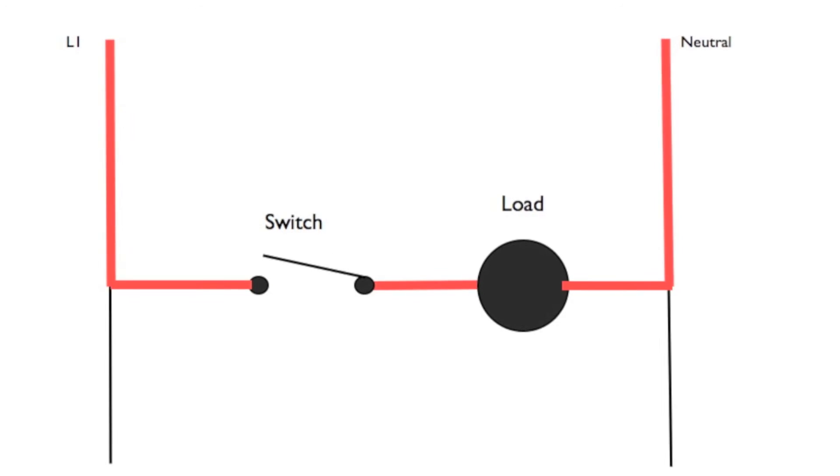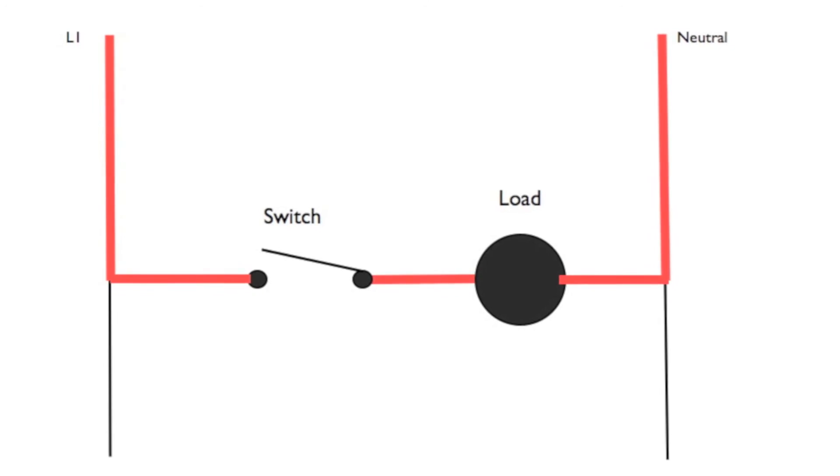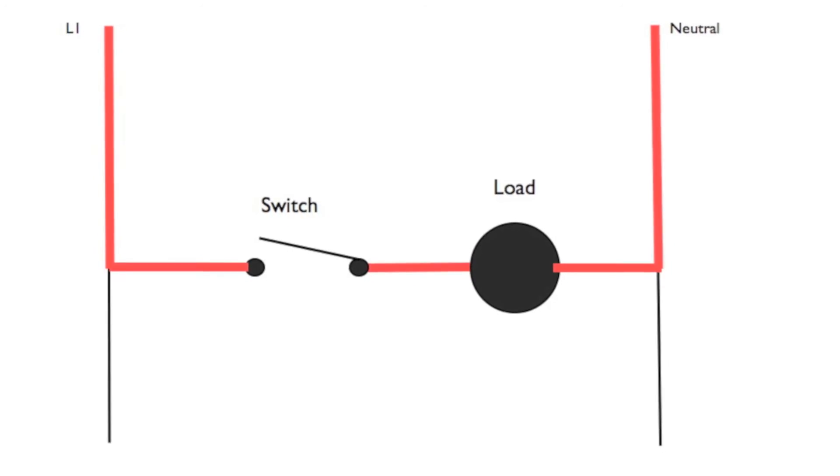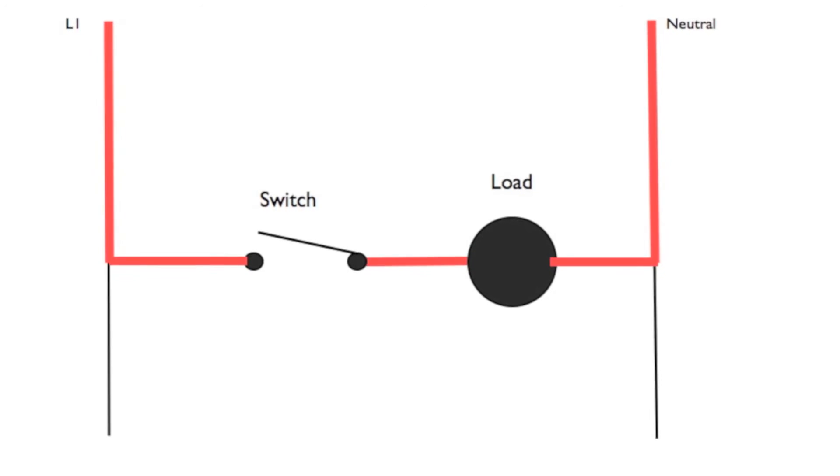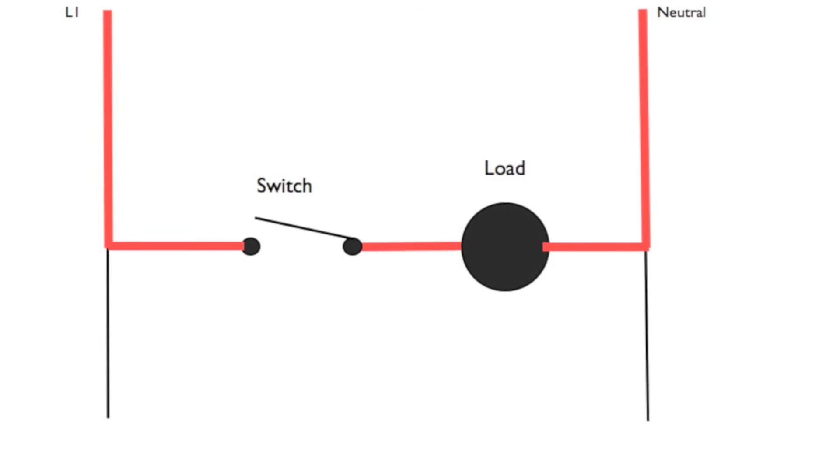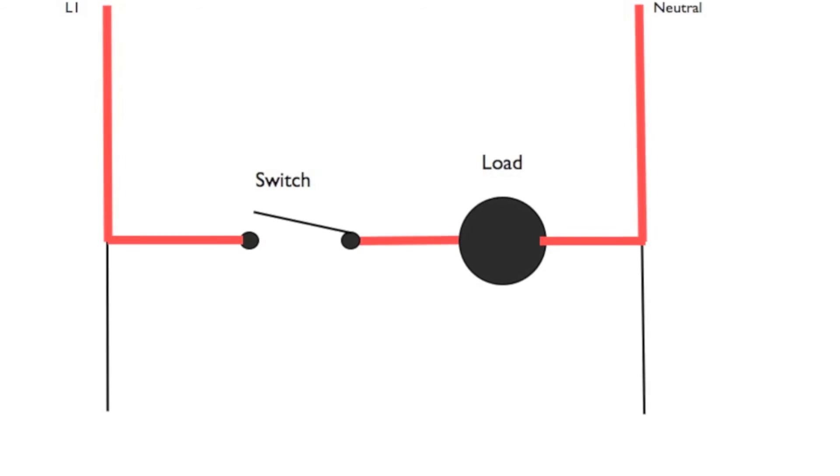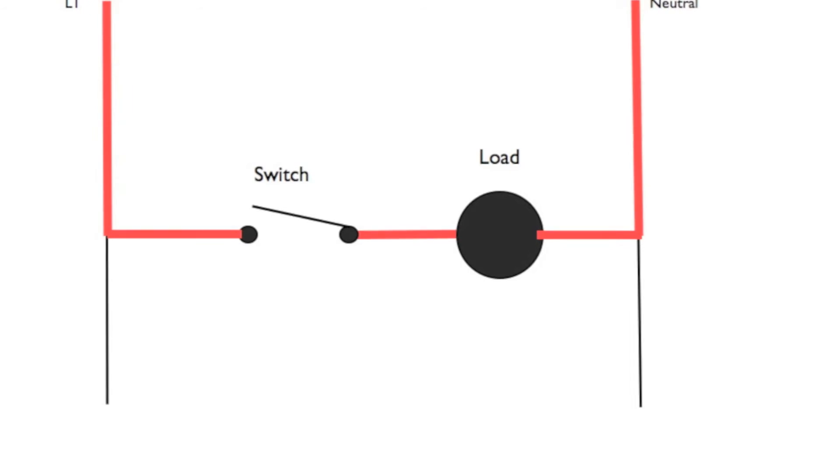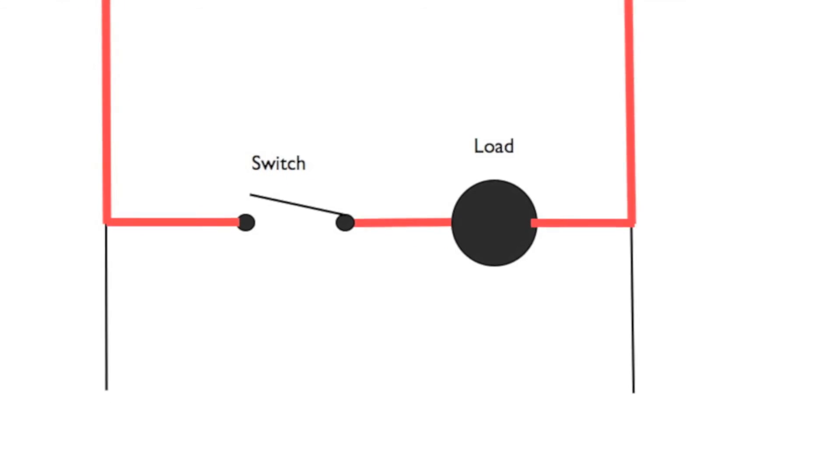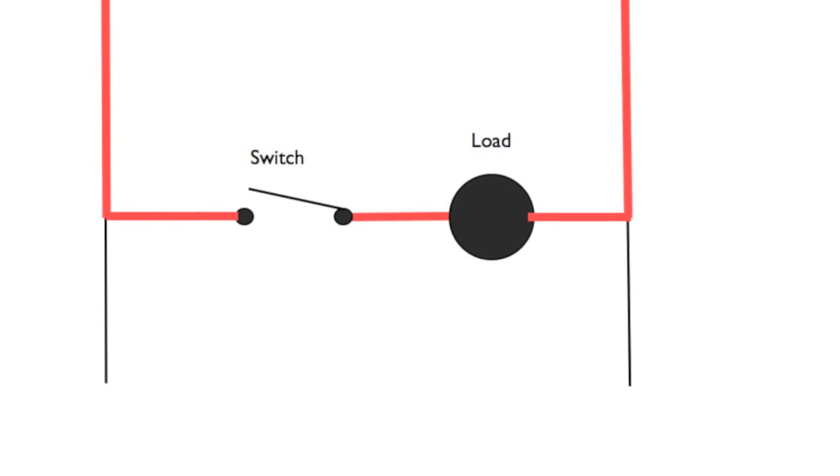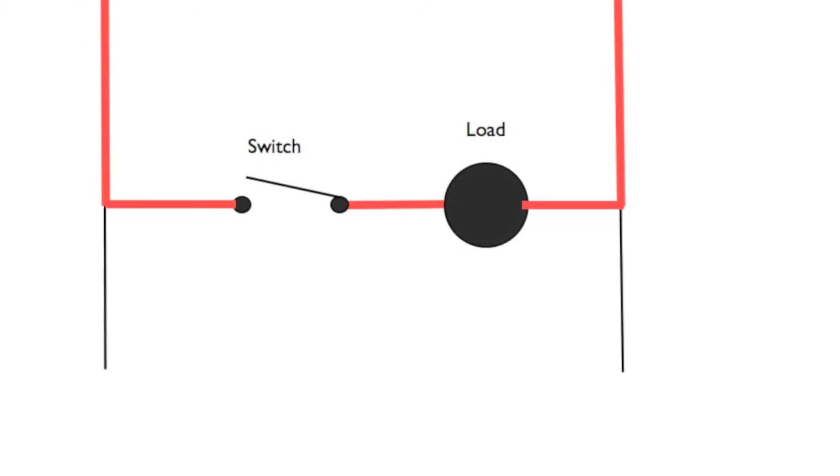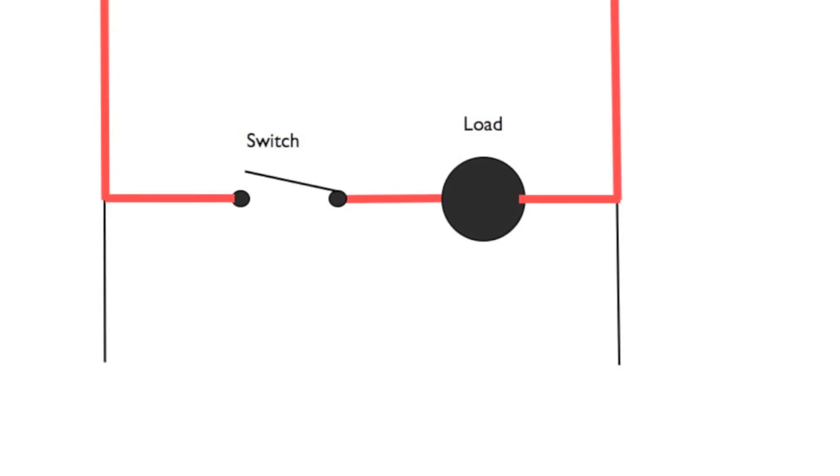Okay, now I'm showing where the power is available. If you look on the left side from L1, power is available right down to the switch. And you look on the right side, power is available down the neutral through the load and up to the switch. So the only thing that is keeping this circuit from operating is the open switch.